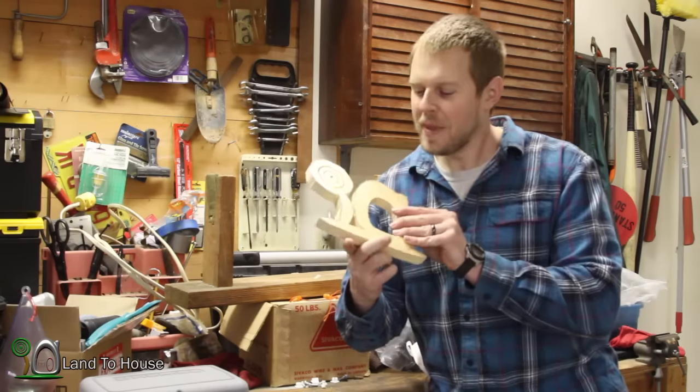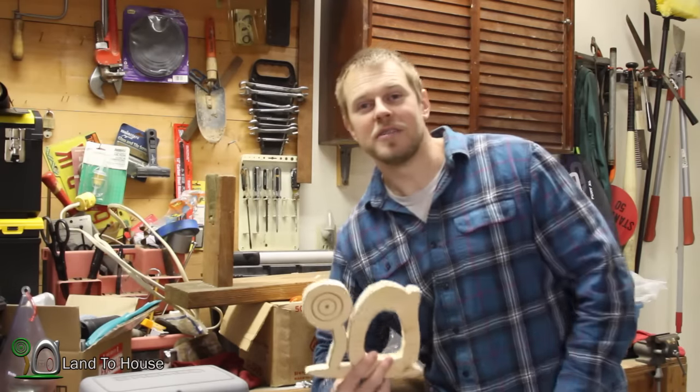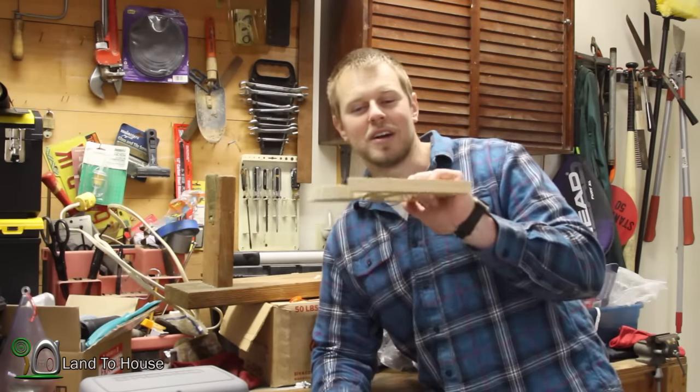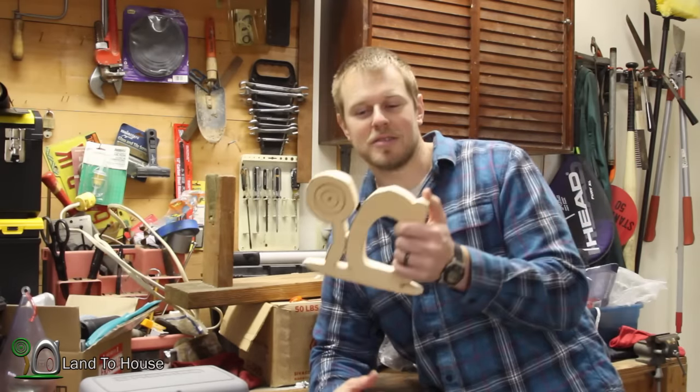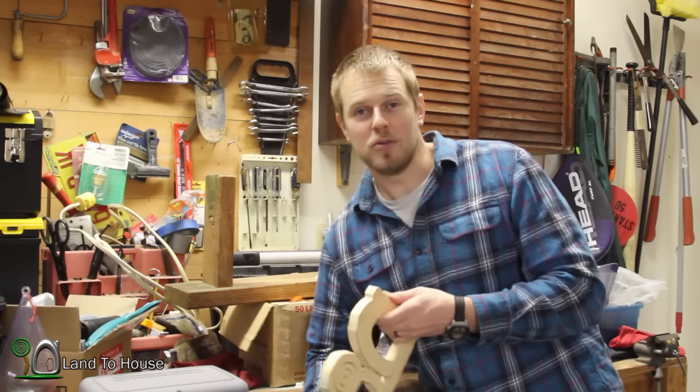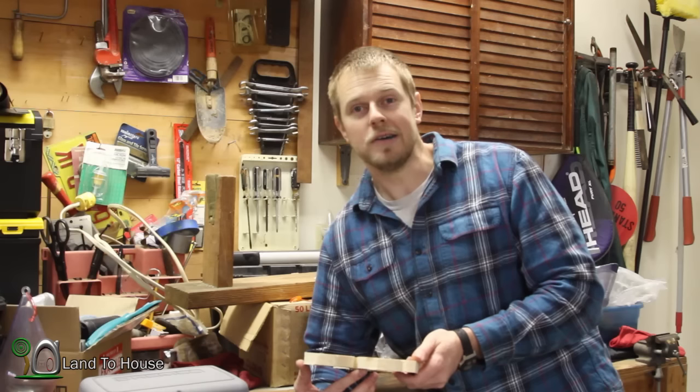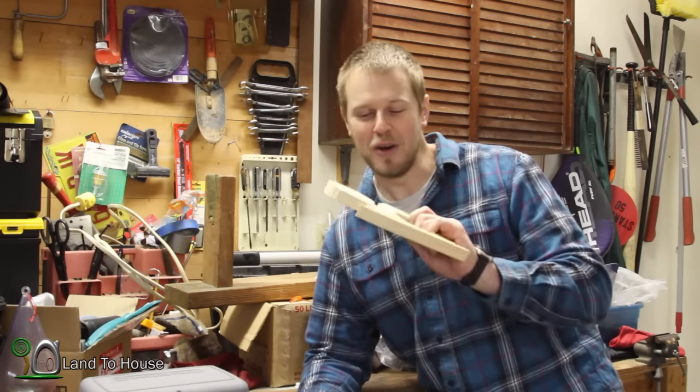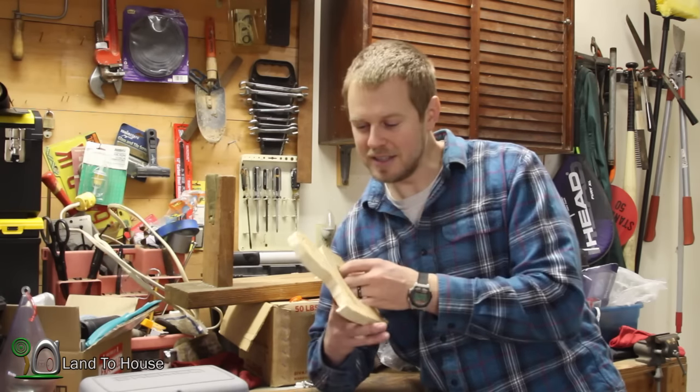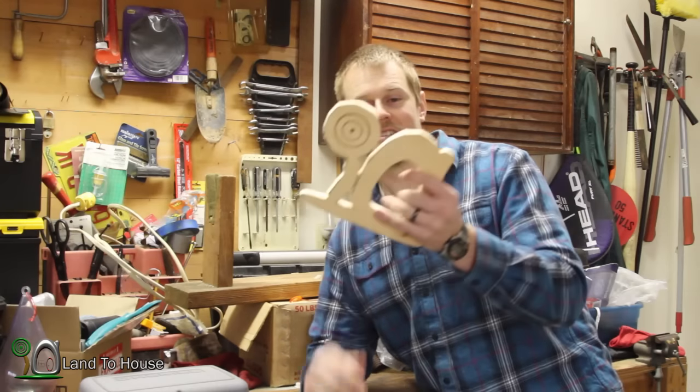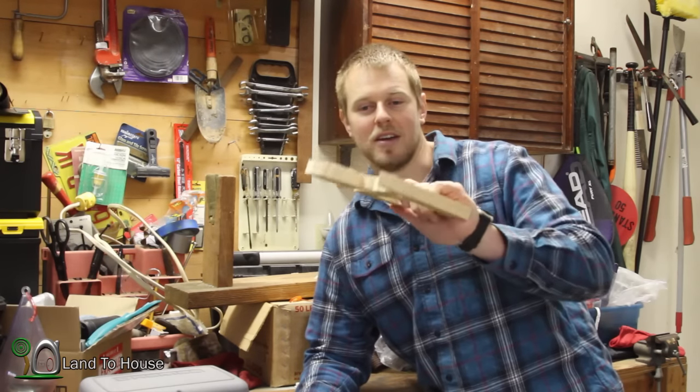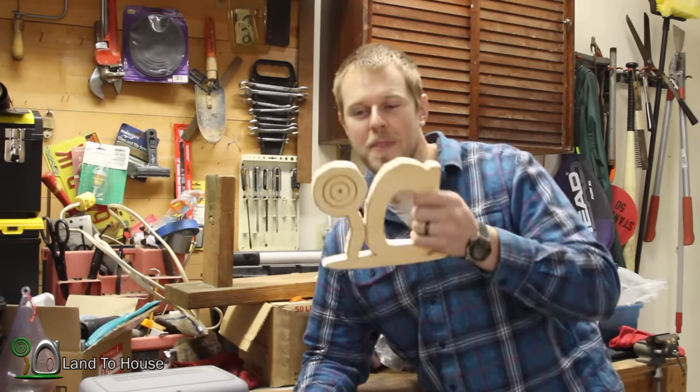Well, I got the logo cut out and my mom came home and I was showing her what it looked like and said I was going to use a knife to round off some of the edges. And she looks at me and says, well you know your dad's got a Dremel tool out in the garage. So I kind of gave her one of those, oh yeah looks. So let's give the Dremel a try and see if we can just round off these edges to make it look more like the digital version of the logo. I don't know if you've ever used a Dremel, but they're handy. I just forget that my dad's got one.